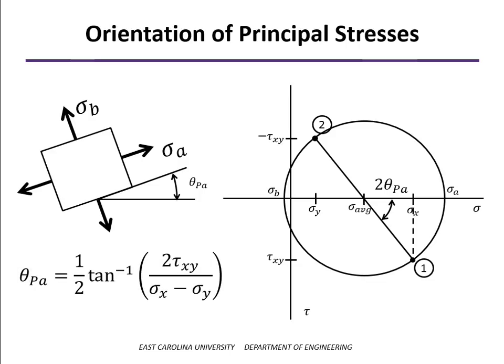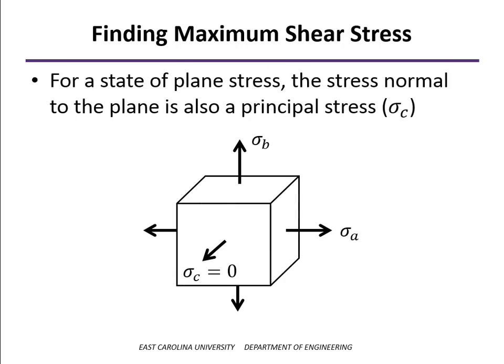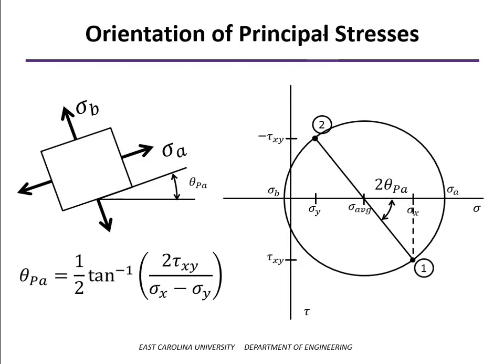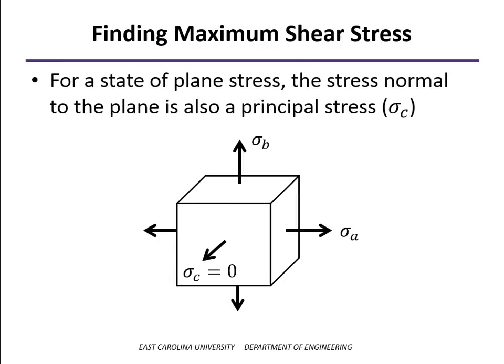You can calculate that angle based on knowing the sides of that triangle. Most of the time the orientation angle is not of primary interest — what we do want to know are the values of sigma a and sigma b. Also, when analyzing failure with the maximum shear stress criterion, we want to know the maximum shear stress. The maximum shear stress is not necessarily the radius of our Mohr circle — that gives us only the maximum in-plane shear stress.